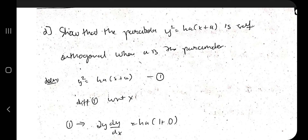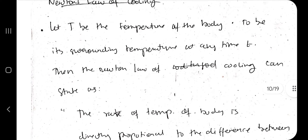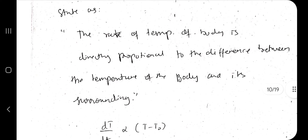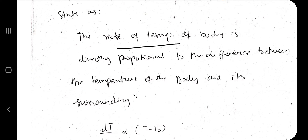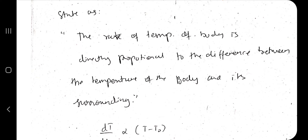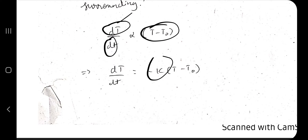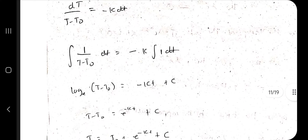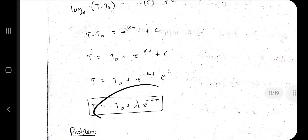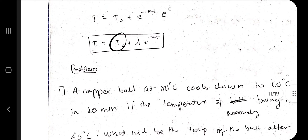Those are the two types of questions under orthogonal trajectories. Moving on to Newton's law of cooling: the rate of change of temperature of a body is directly proportional to the difference between the temperature of the body and its surroundings. So dT/dt = −k(T − T₀). Integrating and taking the log gives the formula T = T₀ + λ·e^(−kt), which we use in the numericals.